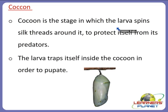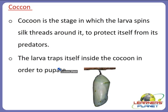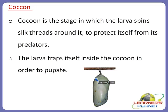Cocoon is the stage in which the larva spins silk threads around itself to protect itself from predators. The larva forms a web-like structure to protect itself, and this spinning of silk threads around itself is the stage called the cocoon. The larva traps itself inside the cocoon in order to pupate. The color of the cocoon varies depending on the silkworm and can range from white to golden yellow.